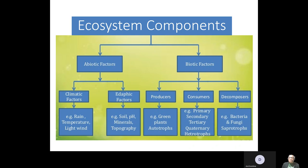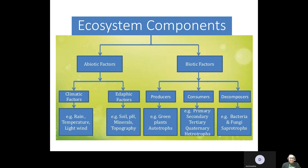Consumers are categorized based on the level by which they consume food in the trophic level. We have primary consumers who feed on the producers, then secondary consumers who feed on the primary, tertiary who feed on the secondary, quaternary who feed on the tertiary, and so forth. They are also referred to as heterotrophs. The third group are the decomposers — bacteria, fungi, and saprotrophs — those that feed on dead matter. Nothing in nature goes to waste because even dead organisms become food for these decomposers.